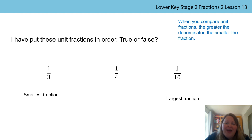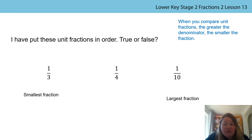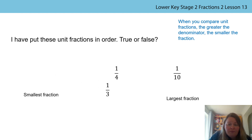You're right, I've made a mistake — the answer is false. I ordered the fractions thinking that the smaller the denominator, the smaller the fraction. But we know that actually the smaller the denominator, the larger the fraction. So my largest fraction is one third, my middle fraction is one quarter, and the smallest fraction is one tenth.